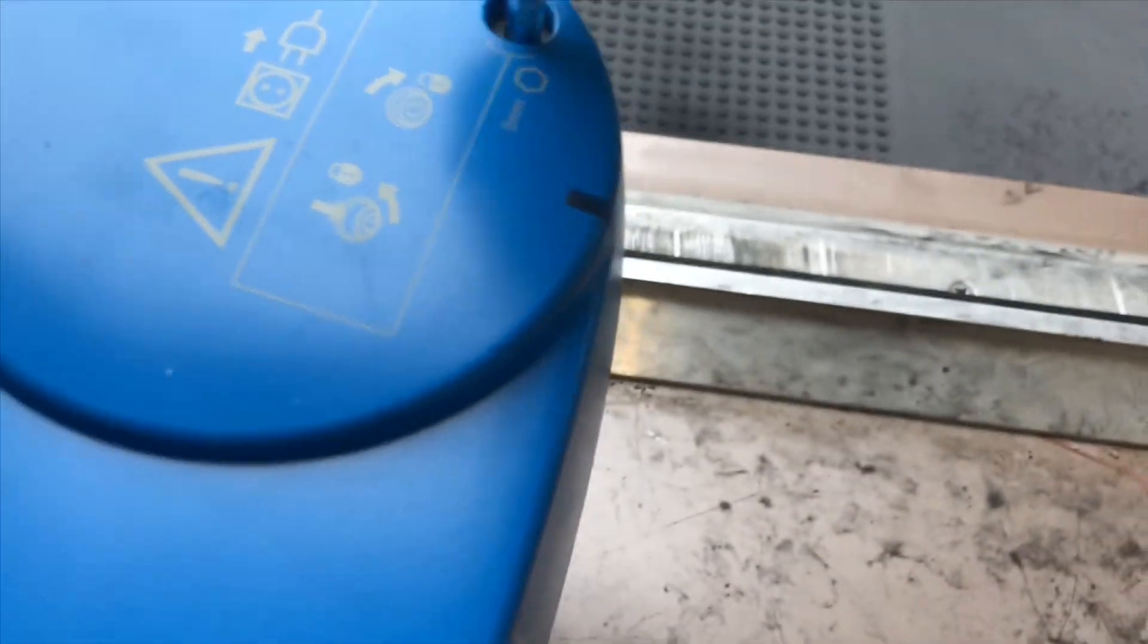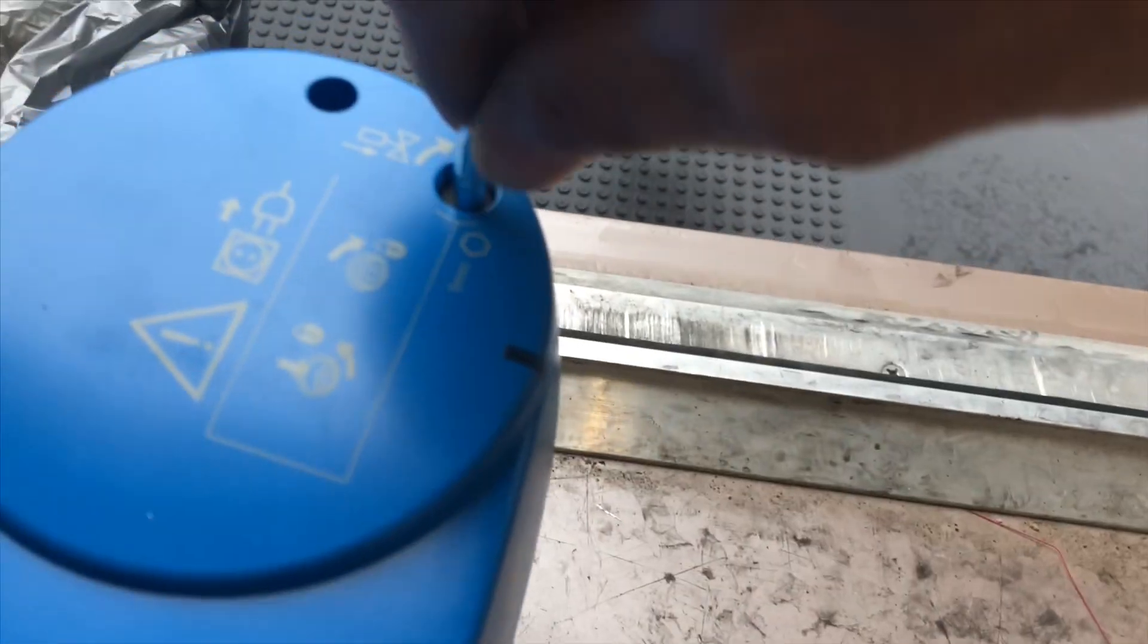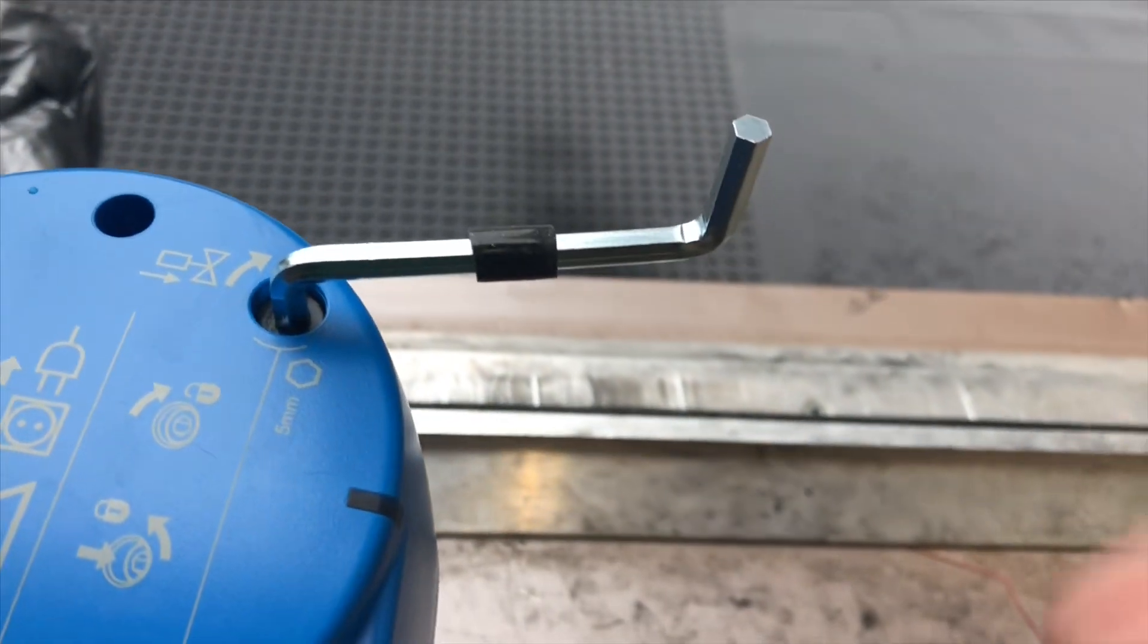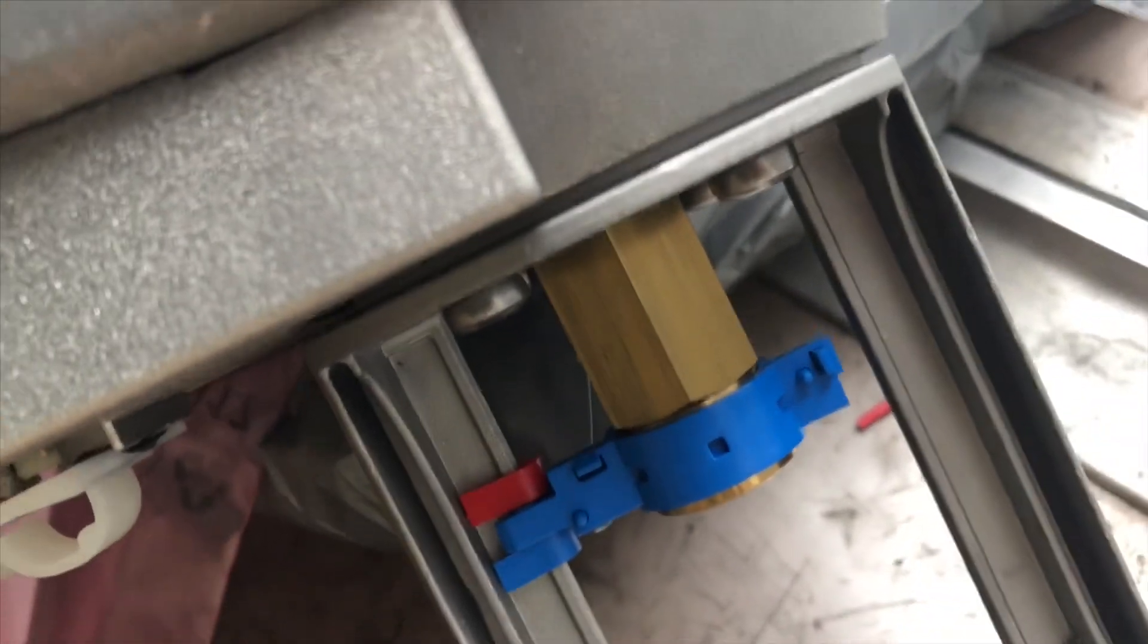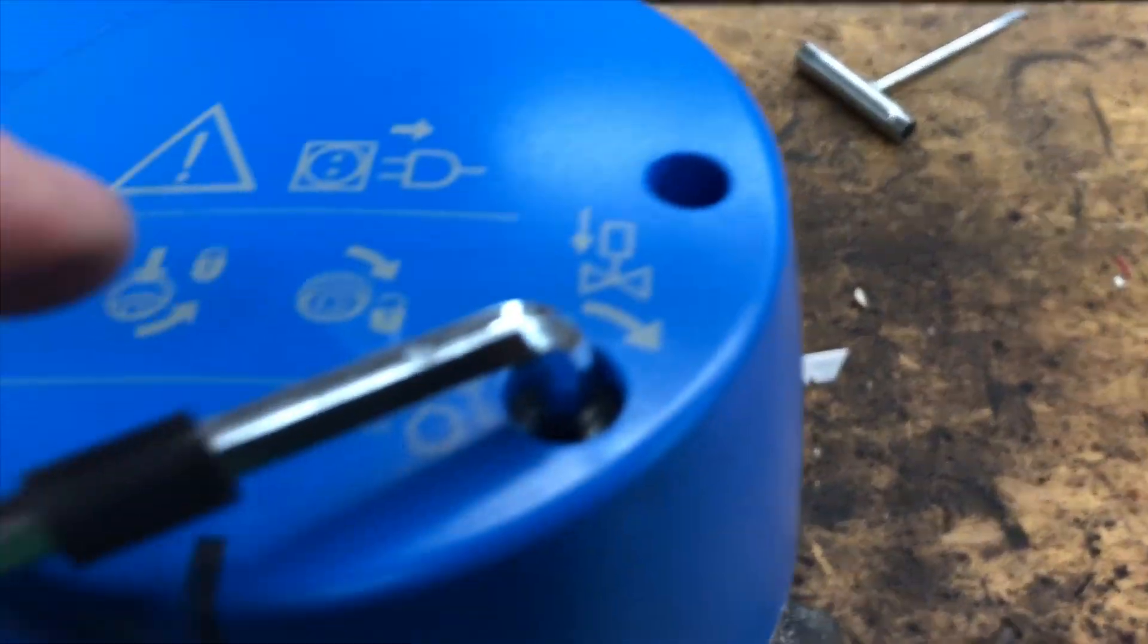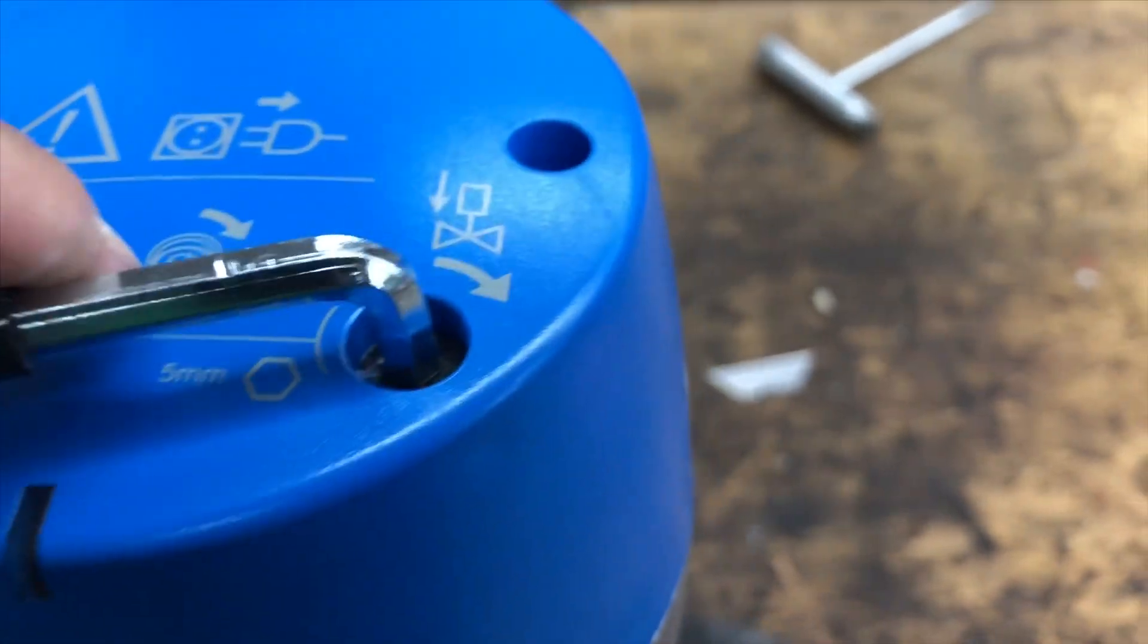You want to insert the supplied Allen wrench. We put a couple cranks down on the manual so it loosens up this set screw or this locking mechanism that holds it to the valve. Once you put a couple turns on this, to manually move the valve, we're going to insert the Allen wrench and twist.